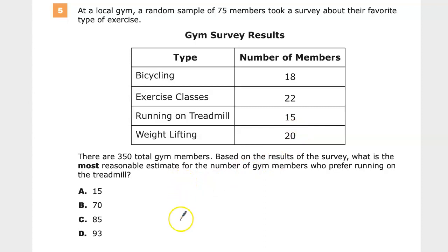I'm going to set up my sample ratio. So out of 75, there are 15 of them running on the treadmill, making it the least fun of the things that they enjoy. And it should be equal to,